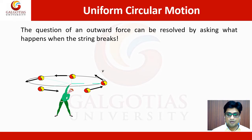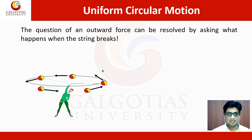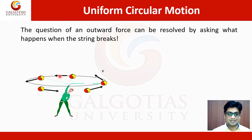The definition of uniform circular motion is: whenever an object is moving with a constant speed through a circle, that is known as circular motion, but the direction of the velocity is changing.